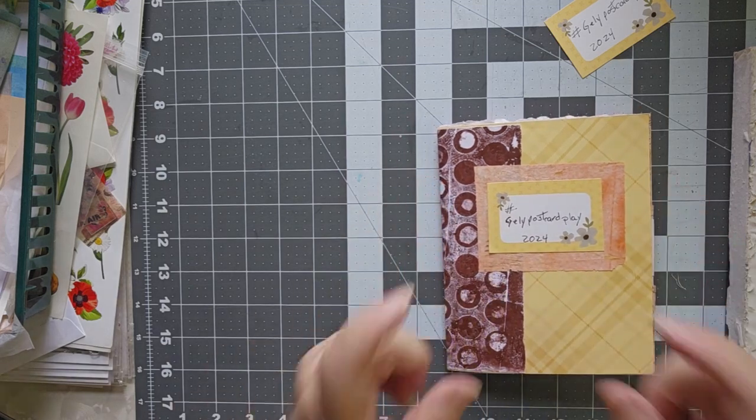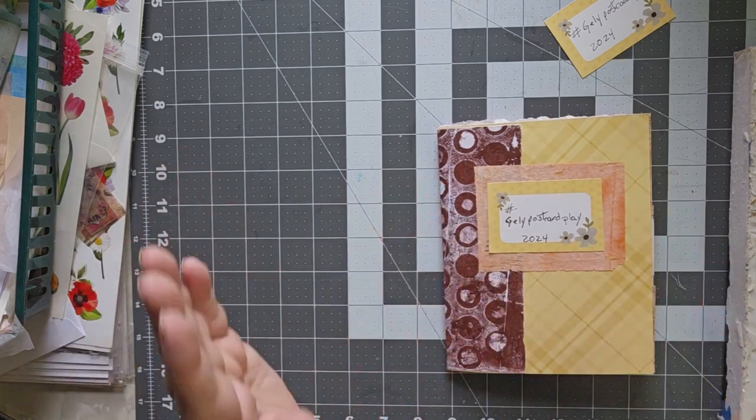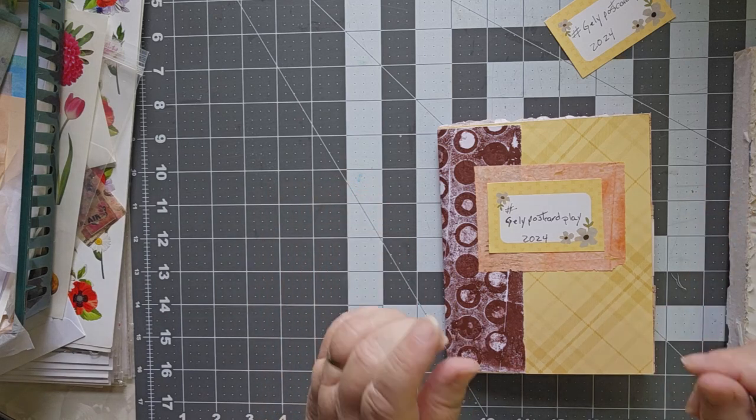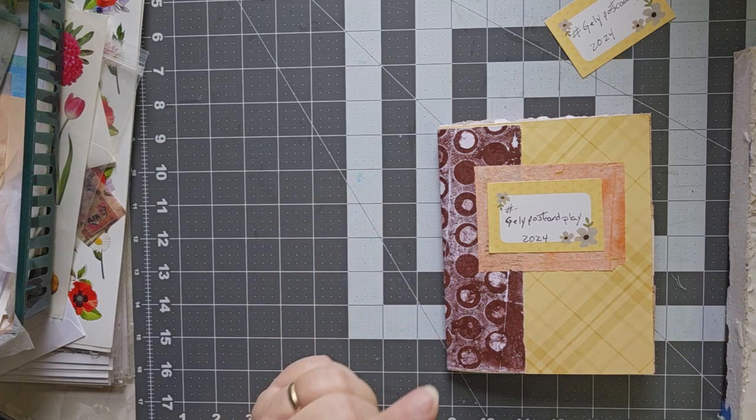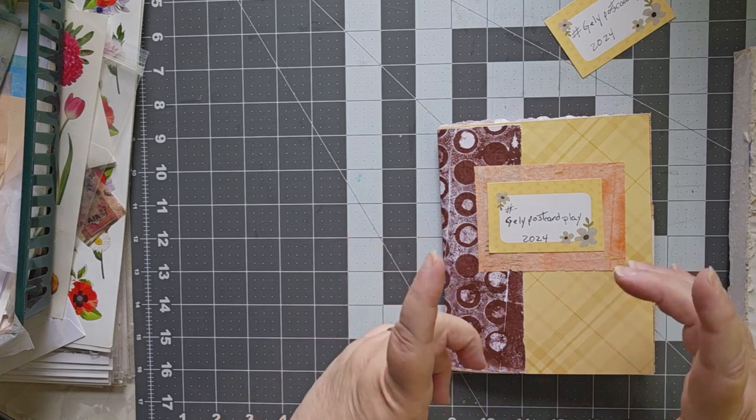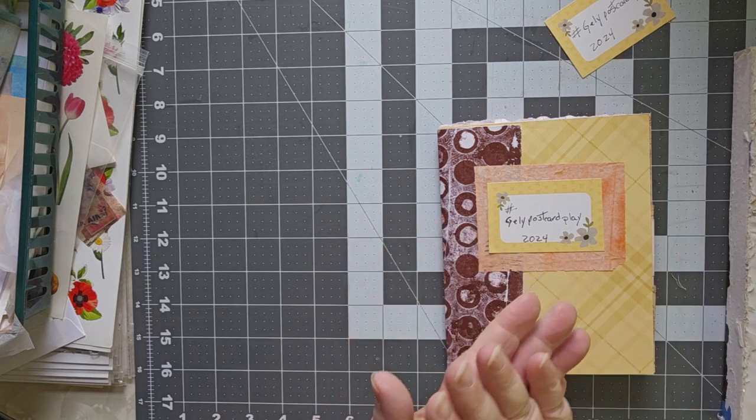For the entire month of July it's a challenge, which means it should have some difficulty to it, and the difficulty isn't in the making, the difficulty is in the sticking with it.